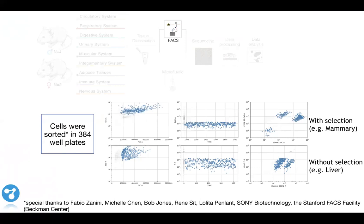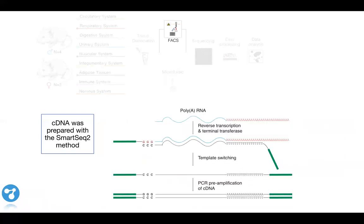On the top you see the mammary which was sorted based on the expression of given surface epitopes CD24 and CD49f. Other tissues were also sorted this way, like the bone marrow. Then there were tissues like the liver that was basically sorted only gating on viability—we sorted cells that have a reasonable size and seem to be viable based on standard markers.